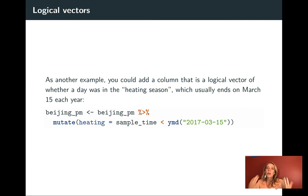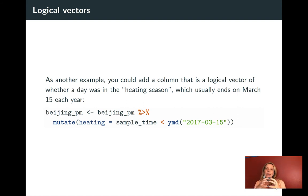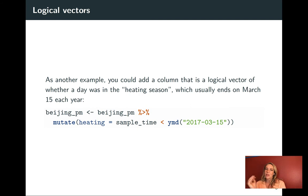Another thing we could do is work with the datetime value. In an earlier video I talked about how you can convert something into a datetime class, and this is one of the places where that comes in really useful. We can add a column checking the time, which is interesting because in Beijing there's a heating season when heating is on in homes, and during that season the sources for pollution change. Typically the heating season ends on March 15th of each year, so this will create a division between observations during the heating season versus those that weren't.